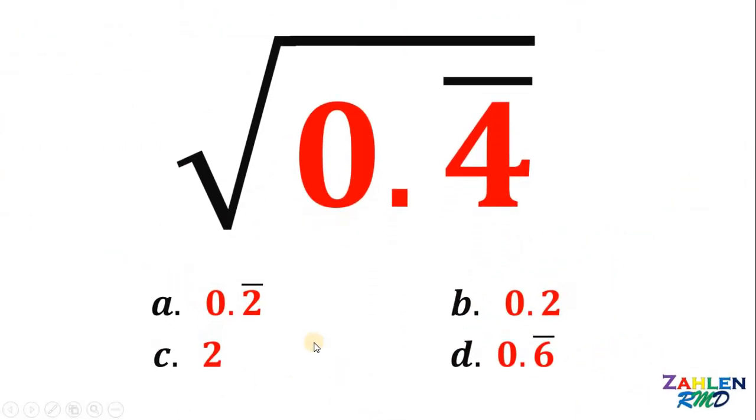What is the value of square root of 0.4 repeating? Is it letter A, 0.2 repeating? Letter B, 0.2? Letter C, 2? Or letter D, 0.6 repeating?